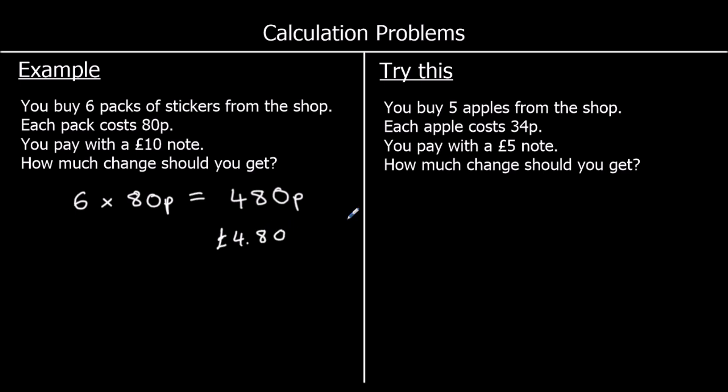You pay with a £10 note — how much change should you get? So if we've got £10 and we take away £4.80, we can probably do this in our heads without the written method. £10 take away £4 is £6, and then take away 80p is £5.20.